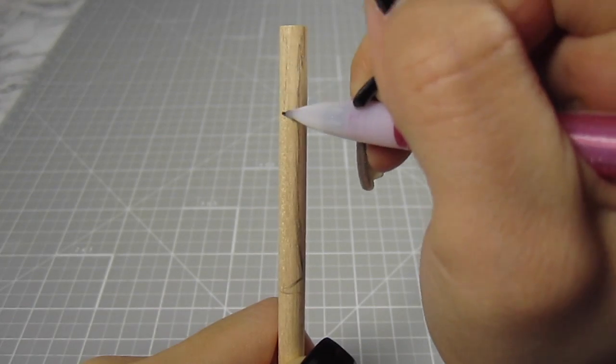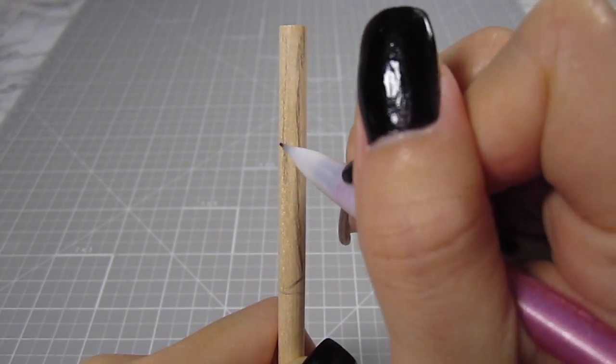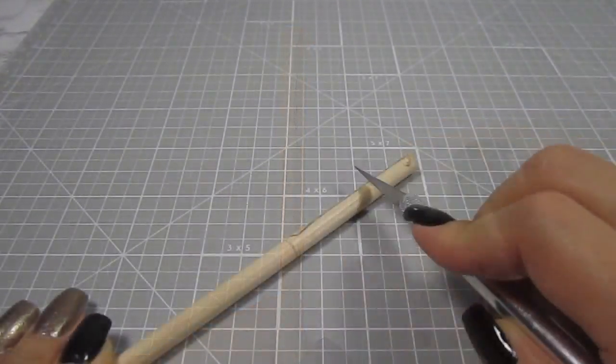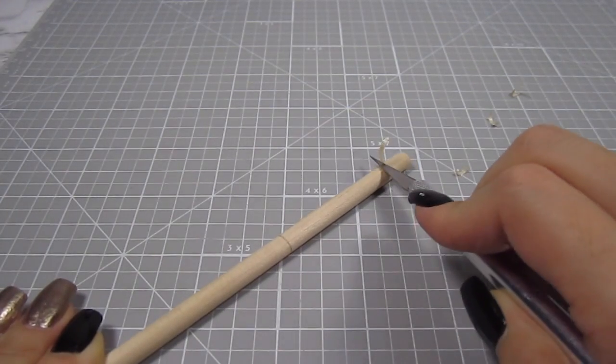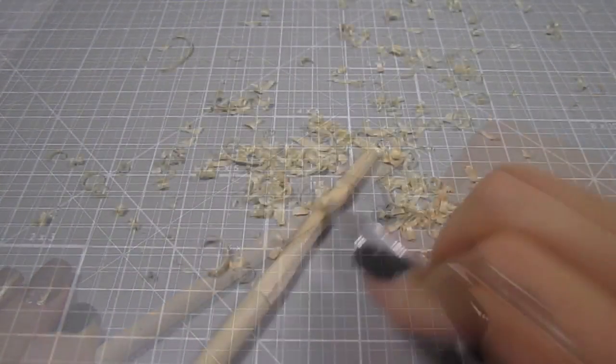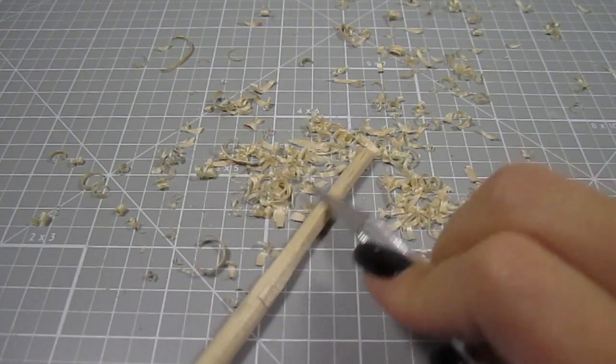As you can see, the top of the handle starts out thin and it gradually gets thicker at the bottom. Then slowly carve out that shape. Basically, I keep thinning out the dowel until I get the shape I want. Be patient here, you never want to rush anything that involves a sharp knife.